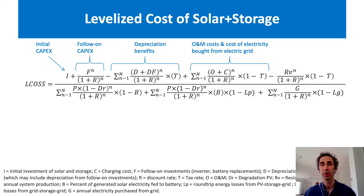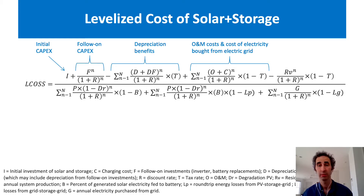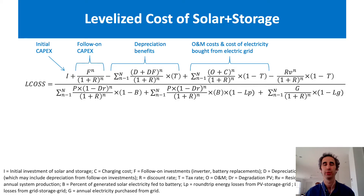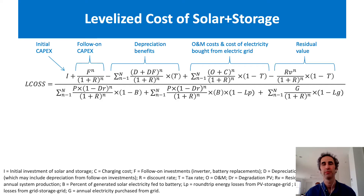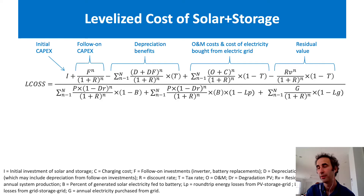We also have O&M costs and the cost of electricity bought from the electric grid — all the costs associated with operating and maintaining the plant and any costs associated with purchasing electricity from the grid and storing it in the batteries. Finally, in the numerator, we have residual value, which represents the value calculated beyond our initial financial time horizon.